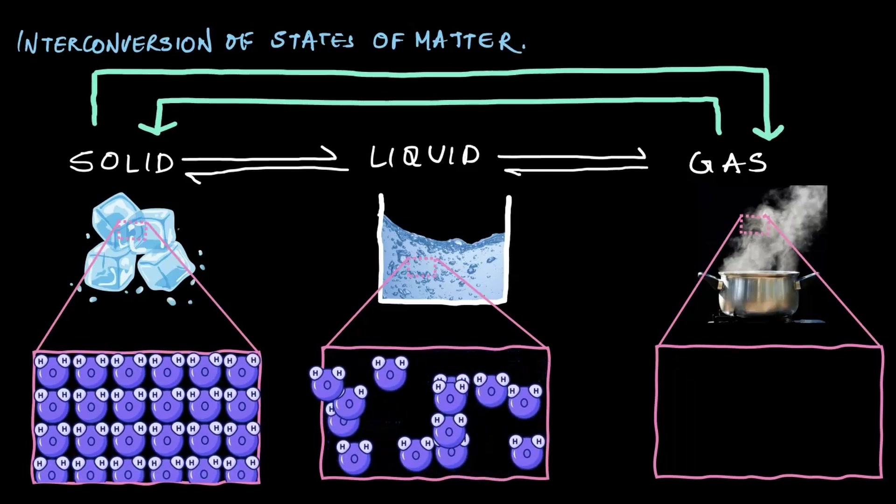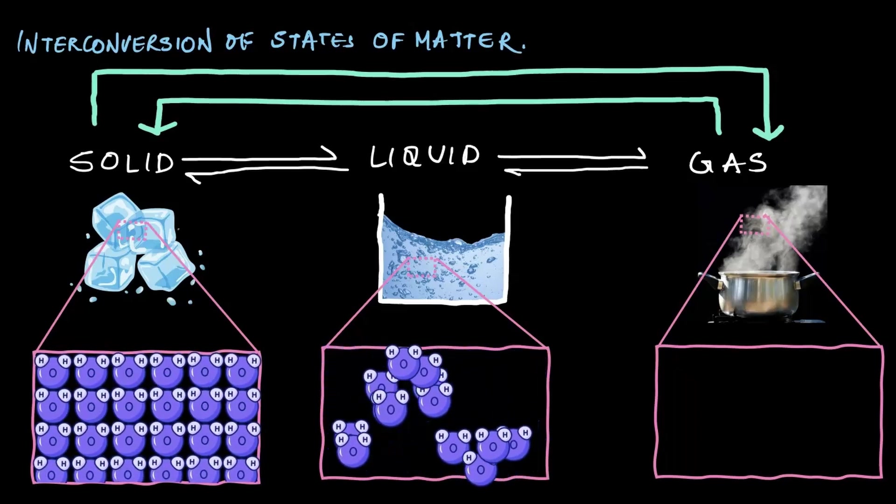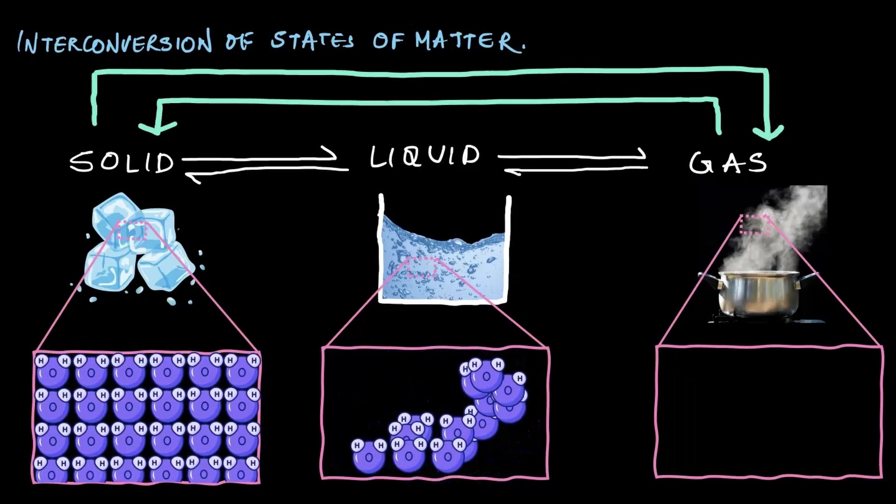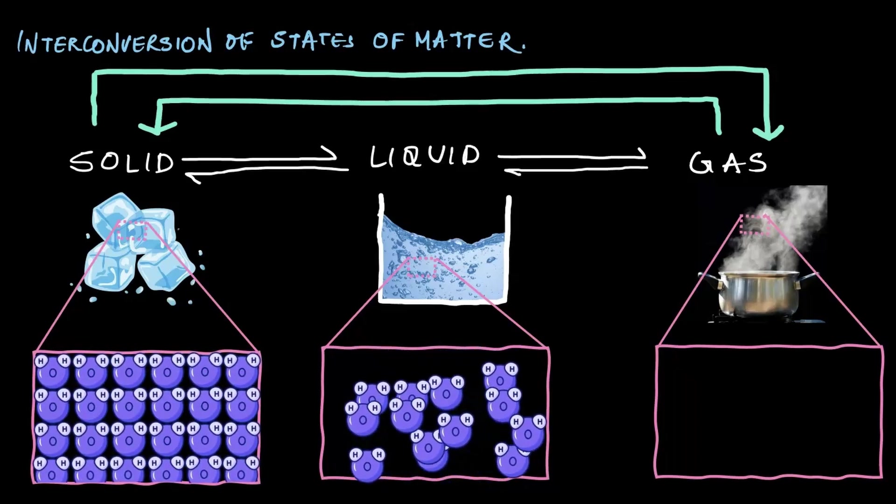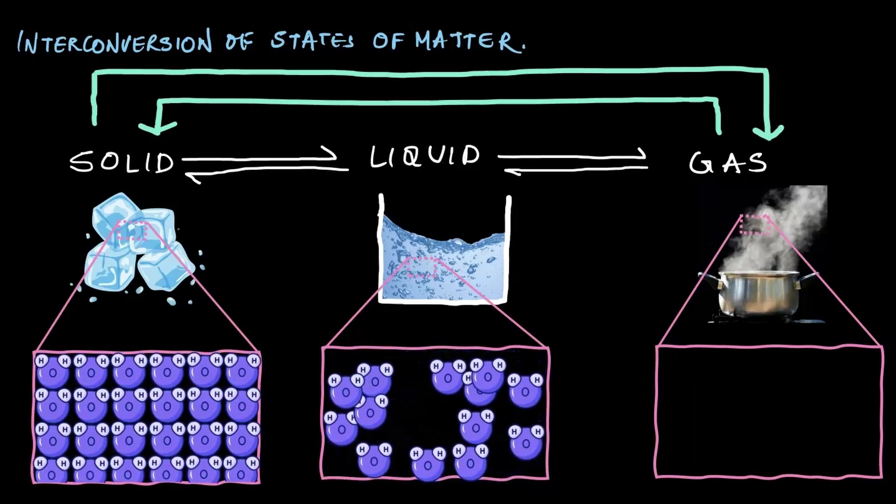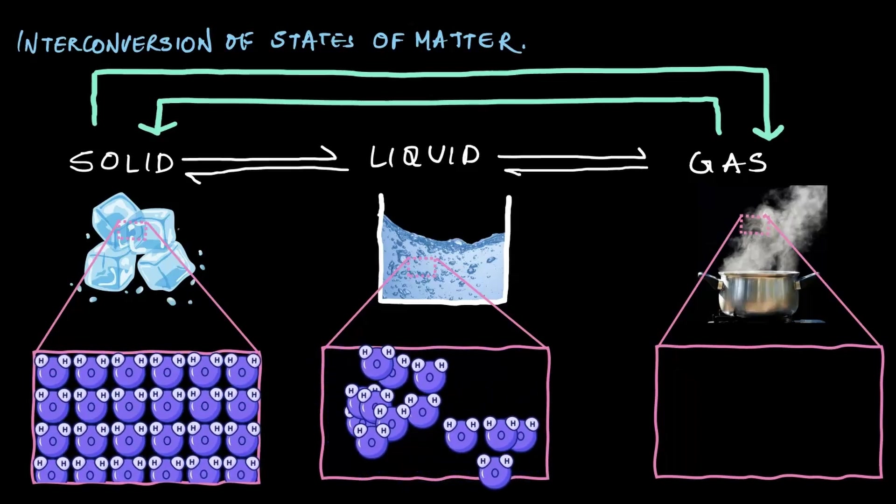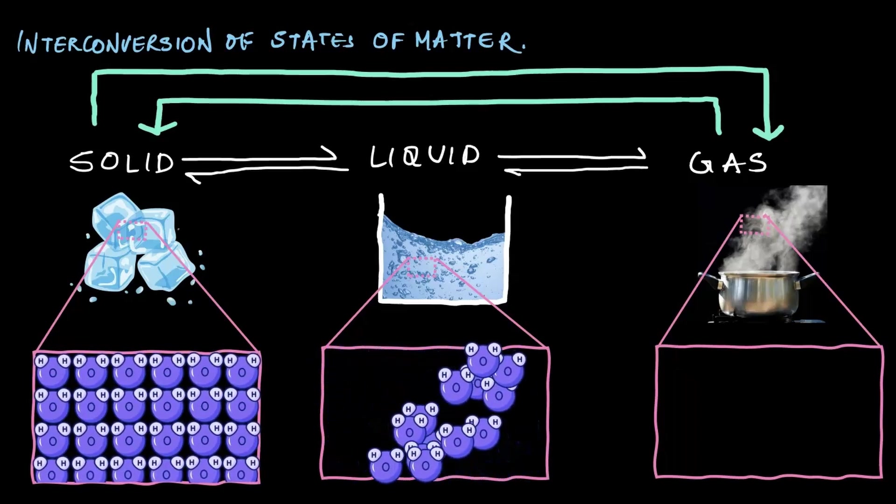Now in liquid, like water, the particles are still close together, but they have more freedom to move around. That's why liquid, like water, does not have a shape of its own. It takes the shape of the container.